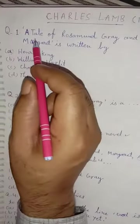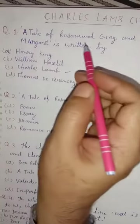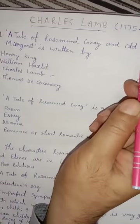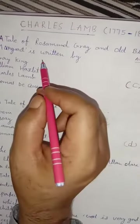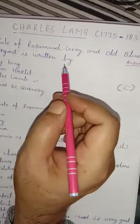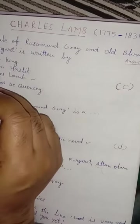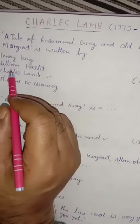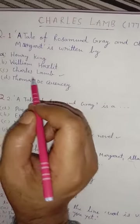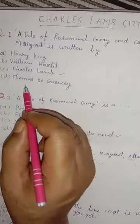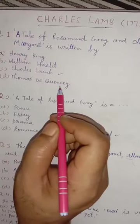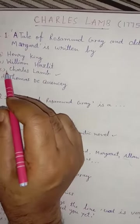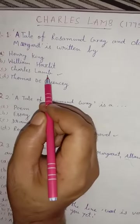Question 1. 'A Tale of Rosamund Gray and Old Blind Margaret' is written by... There are four options: Henry King, William Hazlitt, Charles Lamb, Thomas De Quincey. The right answer is option C — Charles Lamb.